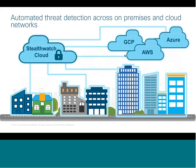Stealthwatch Cloud addresses both the public and the private cloud. If you're a consumer of Google Cloud Platform, AWS, or Microsoft Azure, we integrate with these platforms via API and consume the flow records from them, then do the analytics in the cloud to report back to you as the end user. If you've got a private cloud or private data center, we also have the ability to install a virtual sensor on-prem which collects all the flow data and flow records and feeds it back up to the cloud so you can see what's happening on your environment.